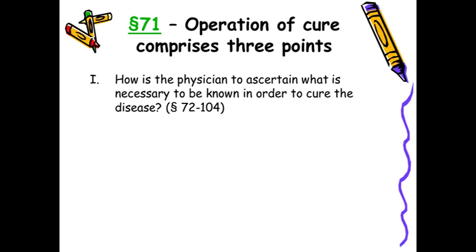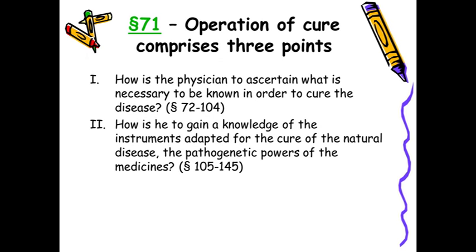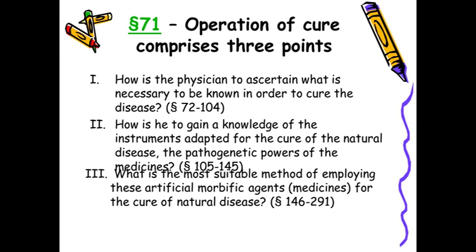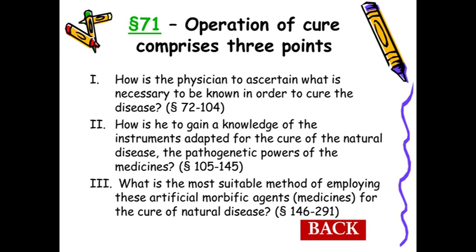How is the physician to ascertain what is necessary to know in order to cure the disease? Here case taking and classification of disease comes. Secondly, the knowledge of instruments adapted for the cure — that is drug proving — is the second part. The third and biggest part: nearly 145 aphorisms have been devoted by Hahnemann to how to cure diseases and how to employ these agents for the cure of natural diseases. The Organon is not a theoretical book — it is a practical book, because nearly half of it is devoted to application.